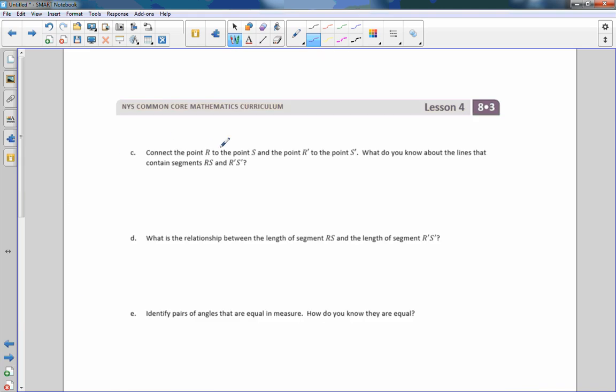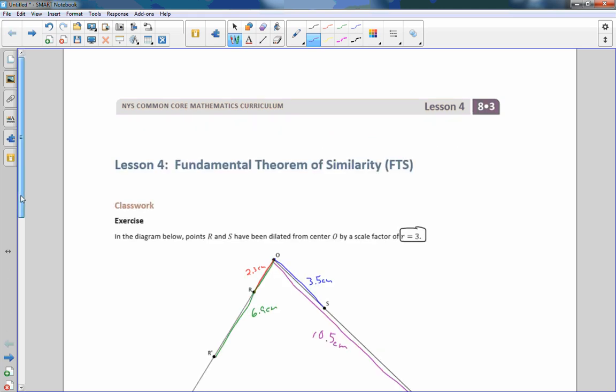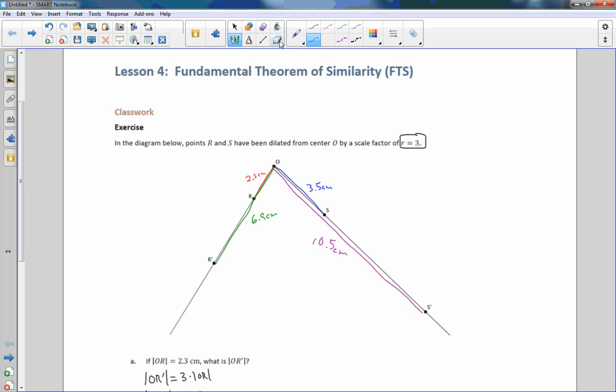C, connect the point R to the point S, and the point R prime to the point S prime. Okay, so we want to connect R to S. So let me get rid of all this stuff from the explanation. Start fresh.